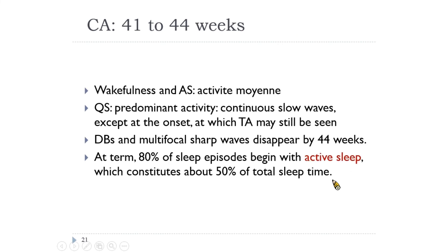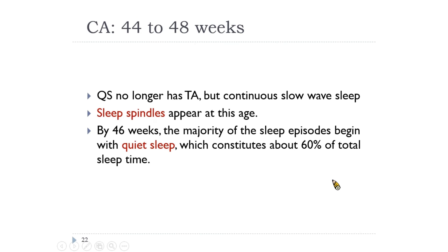At 41 to 44 weeks, activité moyenne is seen in wakefulness and active sleep, and continuous slow waves in quiet sleep — tracé alternant should be gone. Delta brushes and multifocal sharp waves disappear by 44 weeks. At term, 80% of sleep episodes begin with active sleep, which constitutes about 50% of total sleep time. At 44 to 48 weeks, quiet sleep no longer has tracé alternant but continuous slow-wave sleep. Sleep spindles appear at this age, and by 46 weeks the majority of sleep episodes begin with quiet sleep, which constitutes about 60% of total sleep time.